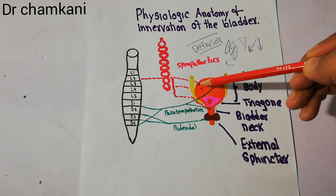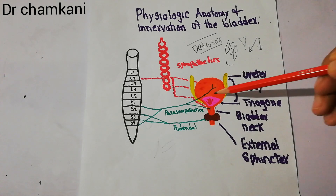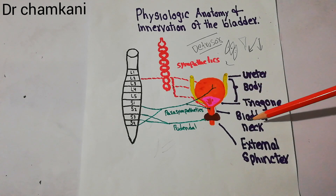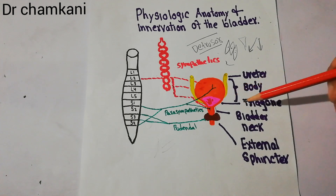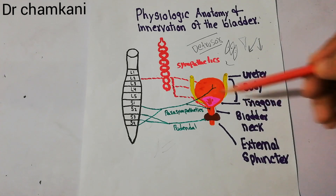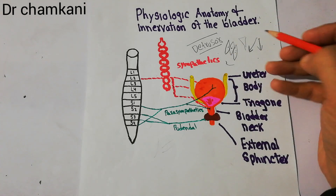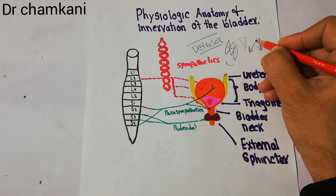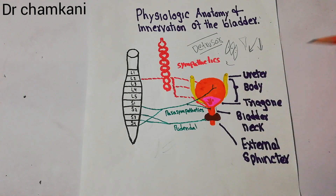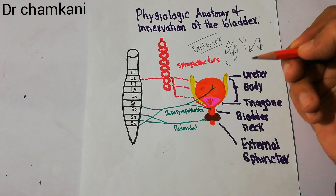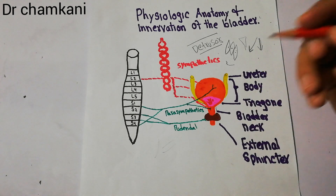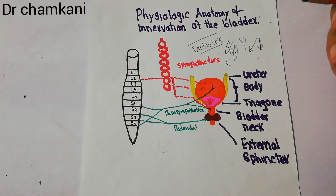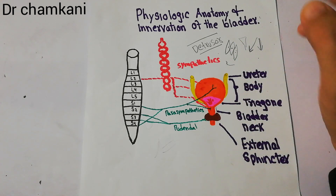The main cavity is the body, and the funnel-shaped area is the neck of the bladder. This funnel-shaped neck goes down inferiorly and anteriorly, and then it meets with the urethra, basically passing through the urogenital triangle.